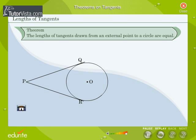Theorem: The lengths of tangents drawn from an external point to a circle are equal. Given: O is the center of a circle.